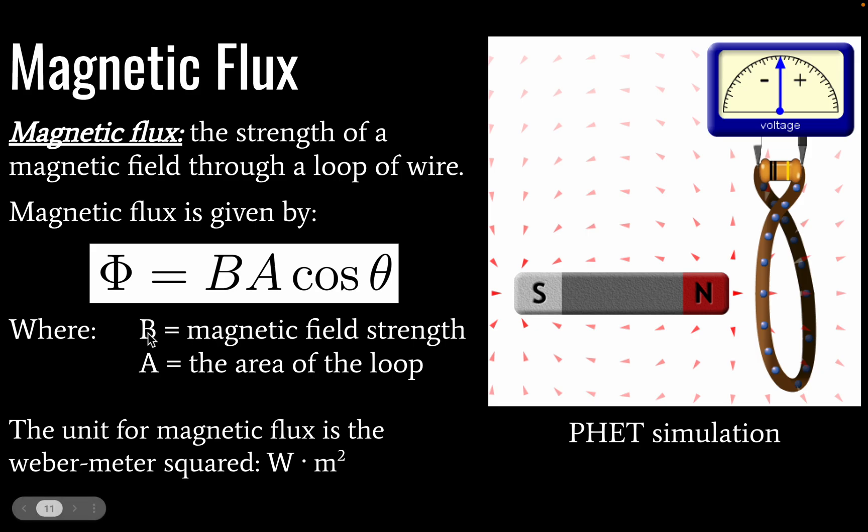So let's define our variables. B is going to be again magnetic field strength. A is going to be the area of the loop. And the unit for magnetic flux is going to be a Weber meter squared.